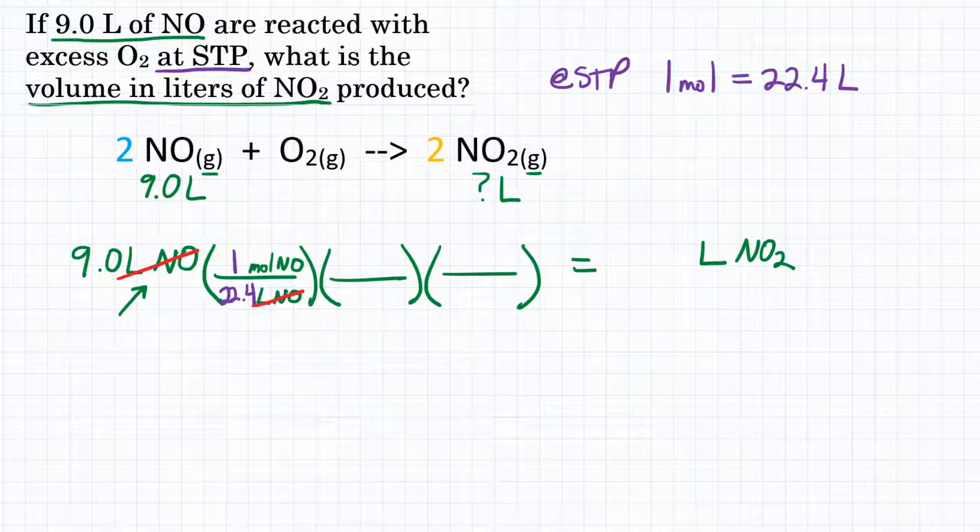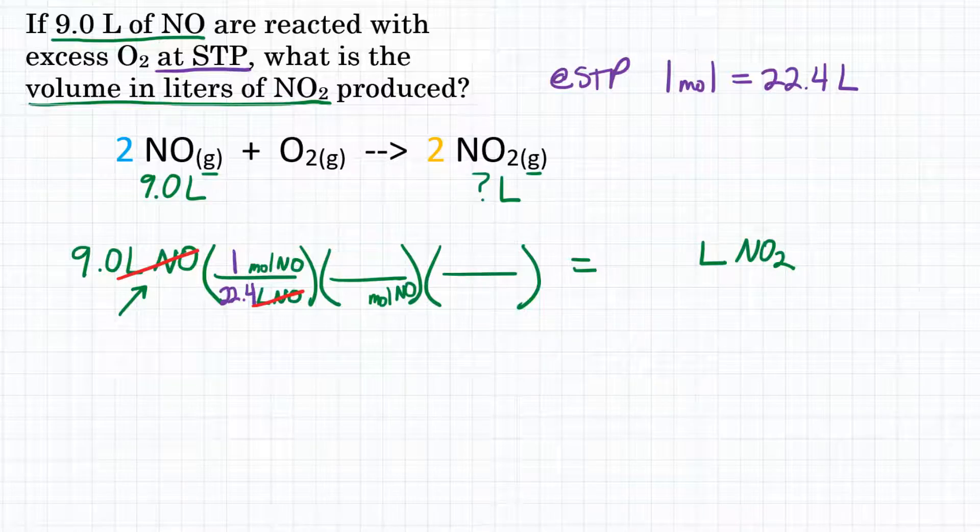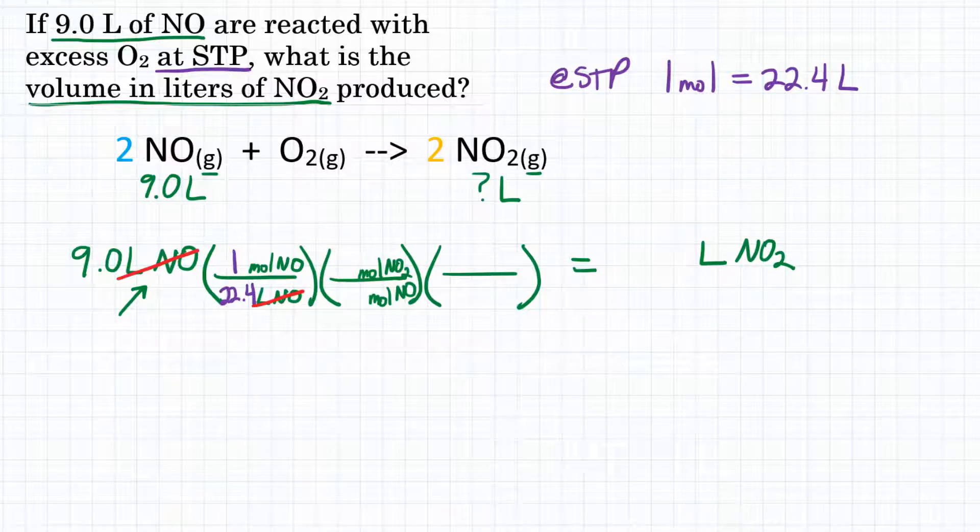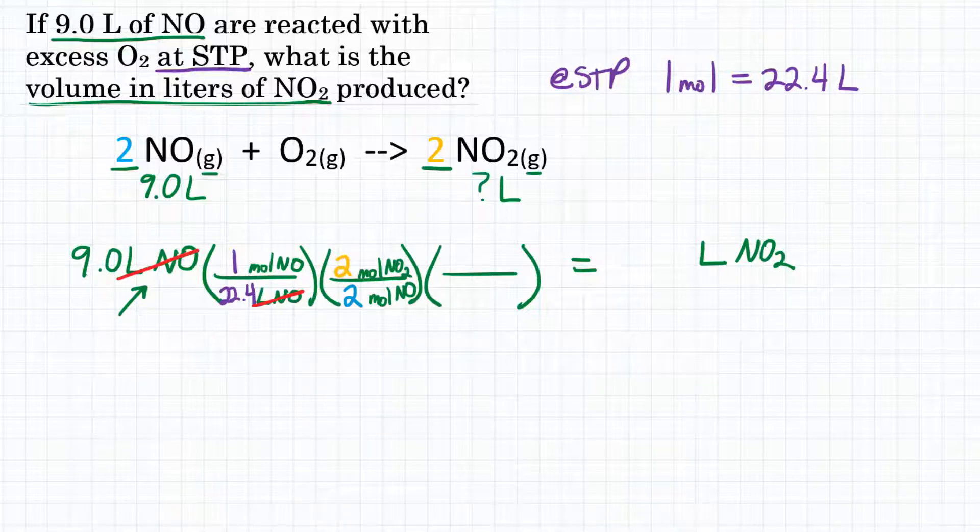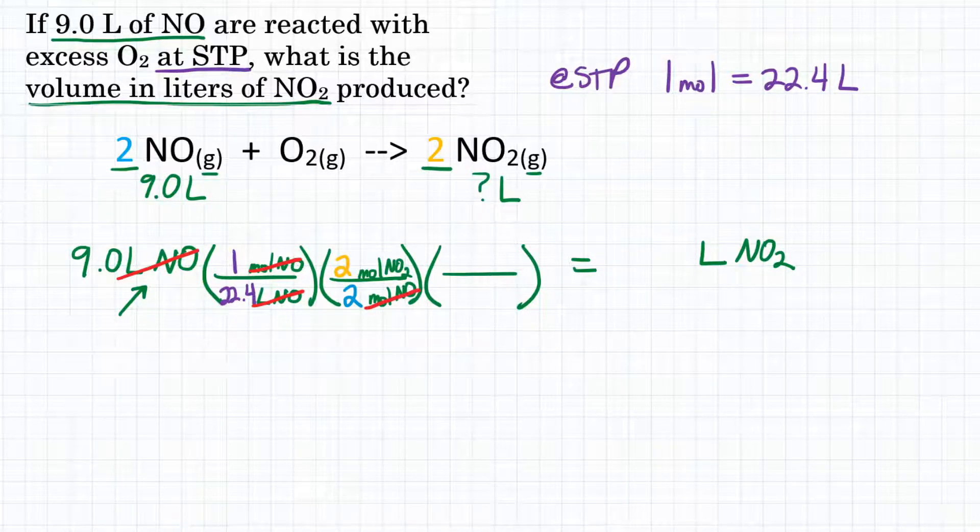We're at moles of NO. So that will go on the bottom of our second conversion factor. And using our coefficients, we can go to moles of what we want, which would be NO2. So what's our relationship between moles of NO and moles of NO2? Well, that will be our coefficients. So we have a 2 in front of NO and a 2 in front of NO2. So we will have a 2 in front of moles of NO2. Our units of moles of NO will cancel.